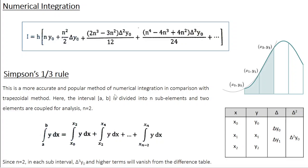Simpson's 1 by 3rd rule is a more accurate and popular method of numerical integration compared to the trapezoidal method. Here also, the interval a, b is divided into subintervals, but instead of one subinterval at a time as in the trapezoidal method, you consider two subintervals at a time. Since we are considering two subintervals, n equals 2. So the integral a to b of y dx can be written as the integral from x0 to x2, plus x2 to x4, all the way to xn minus 2 to xn.